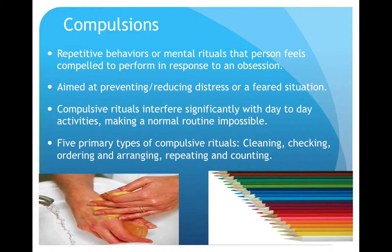There are five primary types of compulsive rituals. Cleaning, to reduce the fear that real or imagined germs or chemicals will contaminate a person. Checking, to reduce the fear of harming oneself or others by developing checking rituals. Ordering and arranging, to reduce discomfort, where some OCD patients prefer to put objects in a certain order or arrange household items symmetrically, as well as repeating and counting.